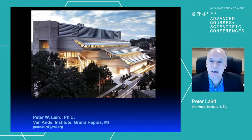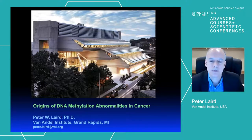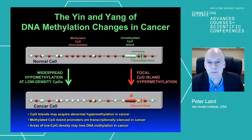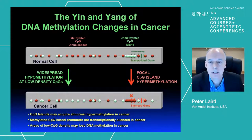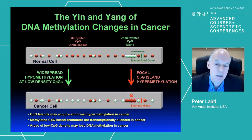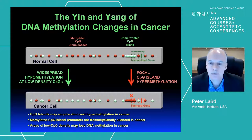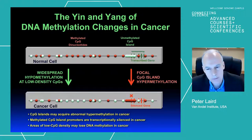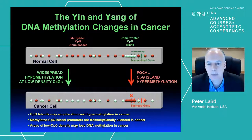Today, I'd like to talk about the origins of DNA methylation abnormalities in cancer, and I'd like to start by going back to a slide that people in the cancer epigenetics field have been showing for probably about three decades or so—the changes that happen to DNA methylation patterns during malignant transformation. I'm not going to talk about enhancer demethylation or CTCF binding site alterations.